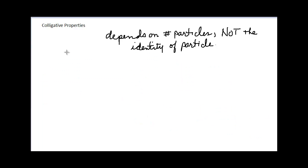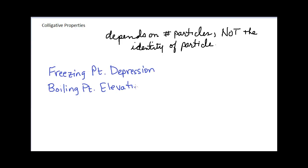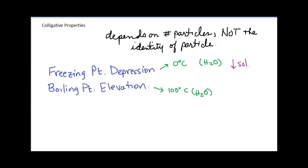The next two colligative properties we'll look at together are freezing point depression and boiling point elevation. For a pure substance like water, the freezing point is 0°C and the boiling point is 100°C. If you add a solute to water to make an aqueous solution, the freezing point is no longer 0 and the boiling point is no longer 100. The freezing point will be lower in a solution, and the boiling point will be higher — that's why we call them freezing point depression and boiling point elevation.